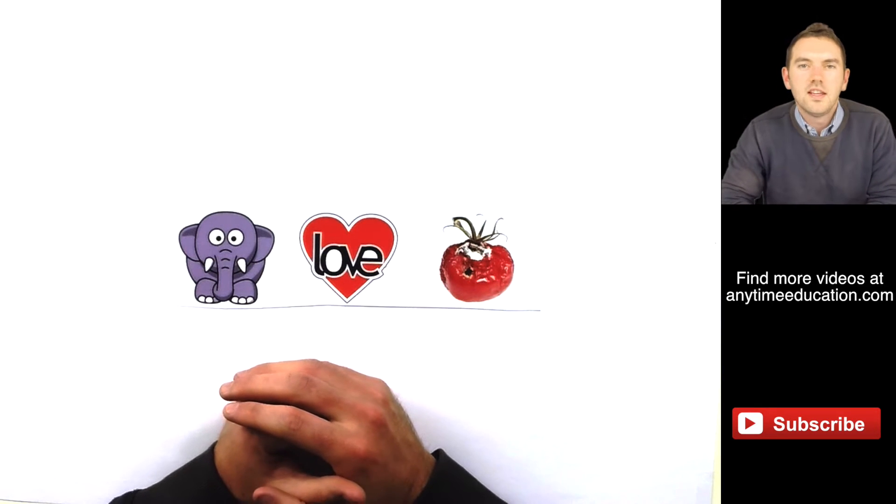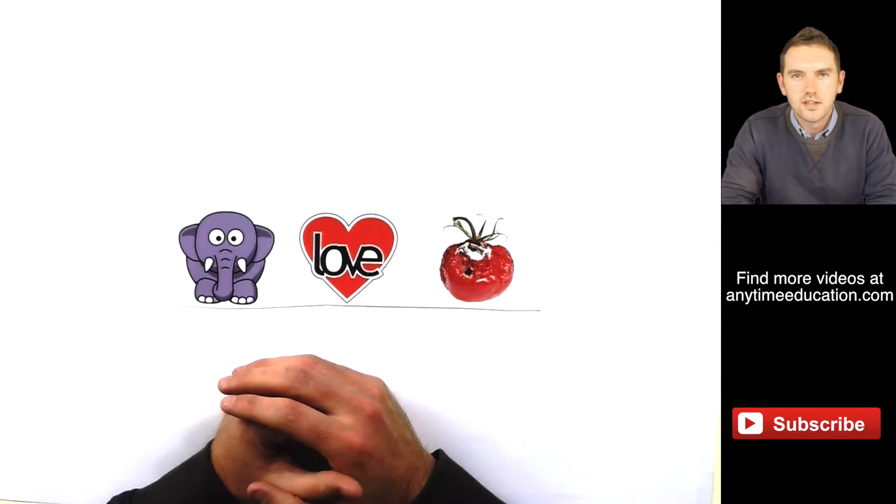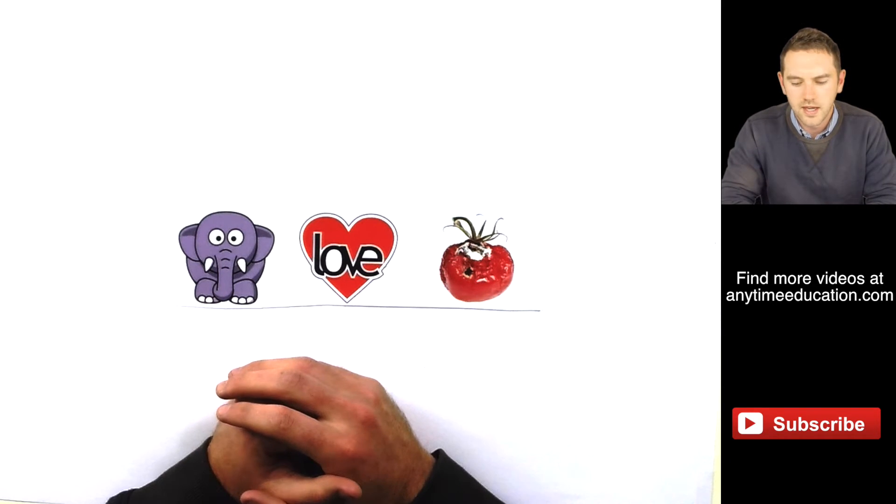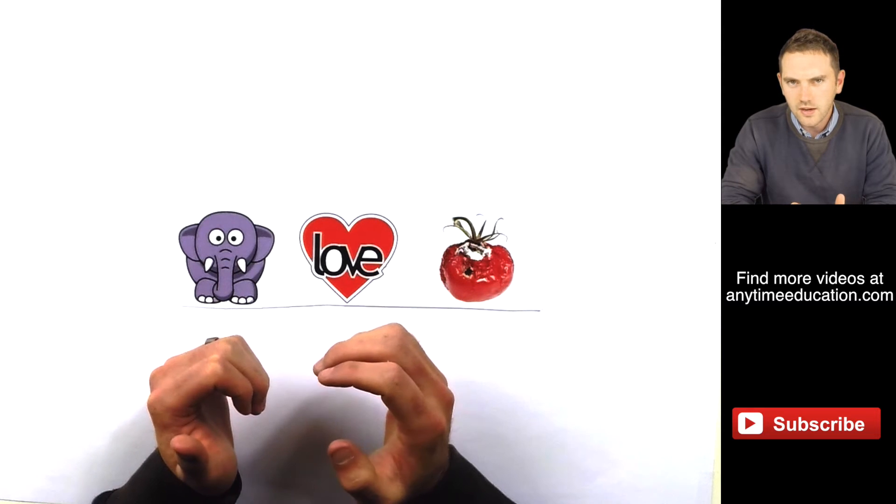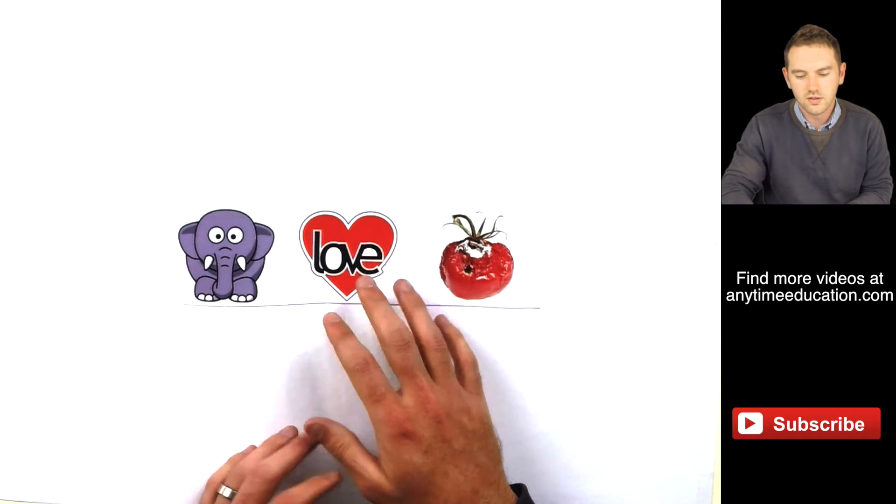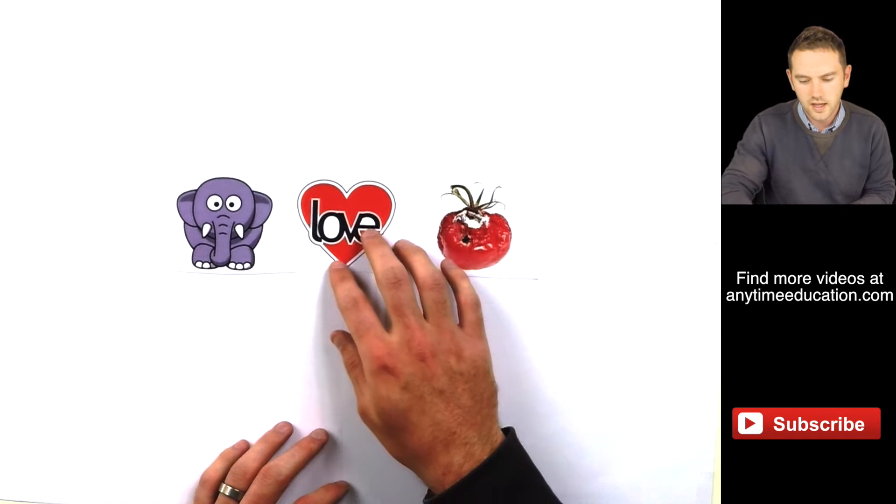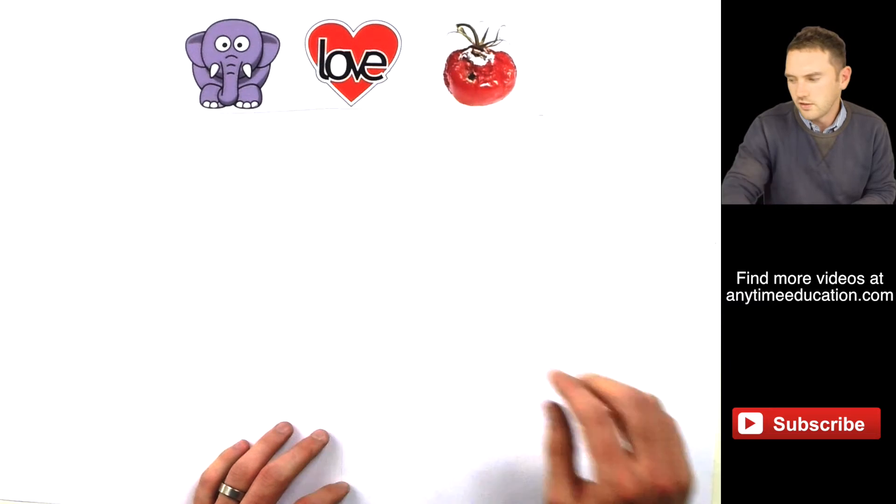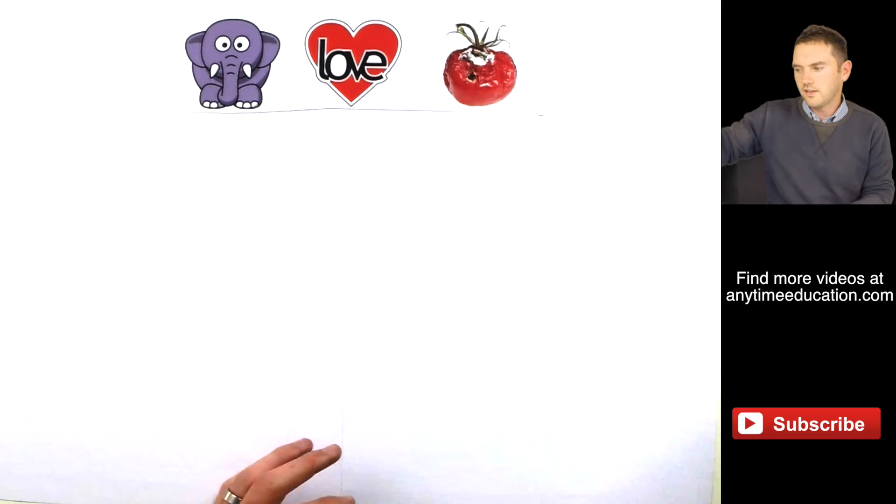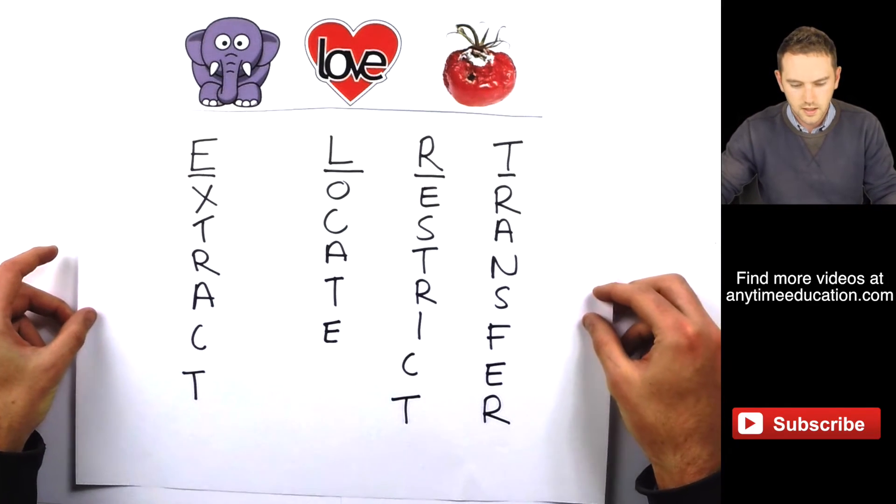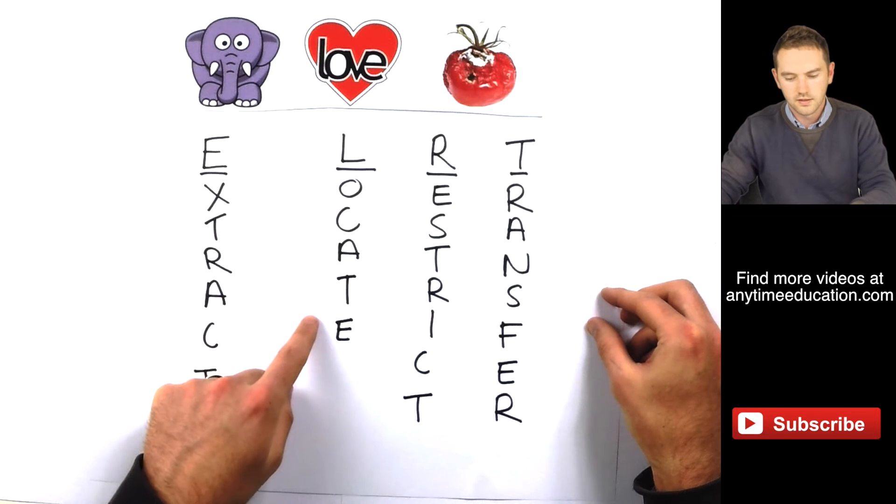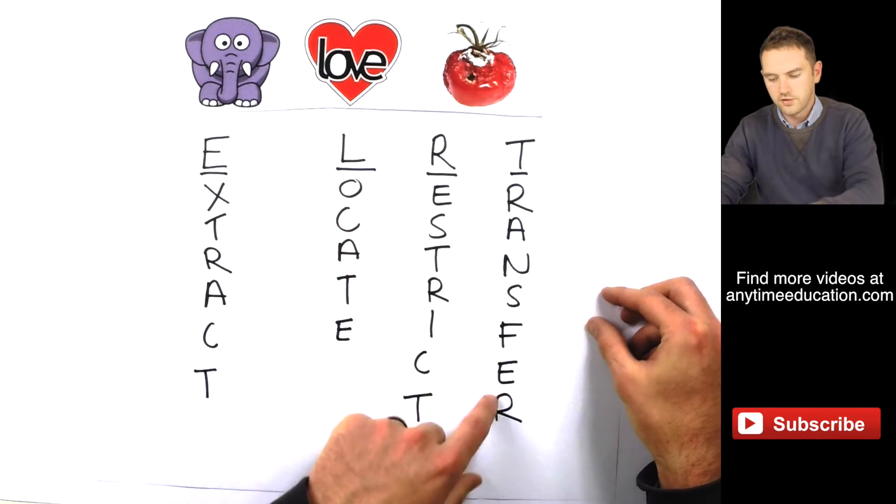Okay, what's the first thing that you think of when you think of genetic engineering? The first thing that pops into my mind is elephants love rotten tomatoes. Now what is that all about, you say? Well, when I'm teaching my students about genetic engineering, I like to really structure their thinking and their understanding. So I get them to remember elephants love rotten tomatoes and that stands for extract, locate, restrict, and then transfer.